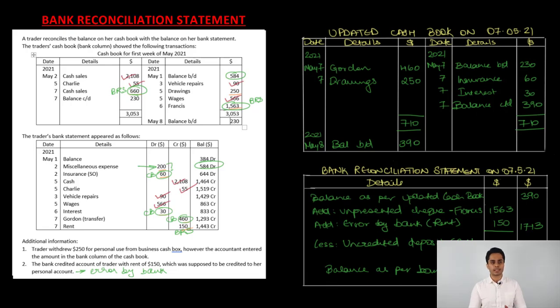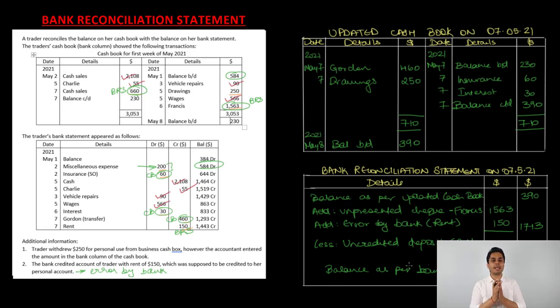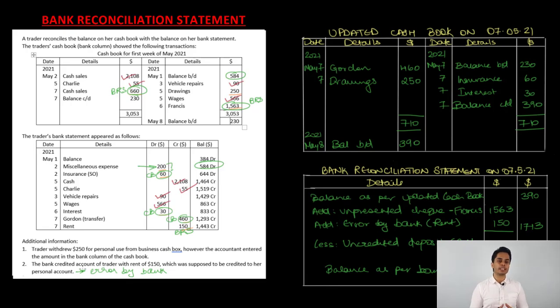Whatever we could update in our cash book, we've updated. For transactions we cannot act on due to timing, we have recorded them in our reconciliation statement and will wait for the bank to either include these transactions in the bank statement or reverse the errors.